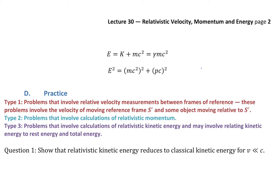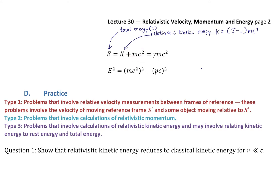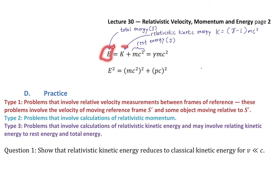The last concept to look at here is total energy, E. Total energy, still measured in joules, is kinetic energy plus the mc squared term — that is, relativistic kinetic energy K, which is gamma minus 1 times mc squared, plus the rest energy mc squared.